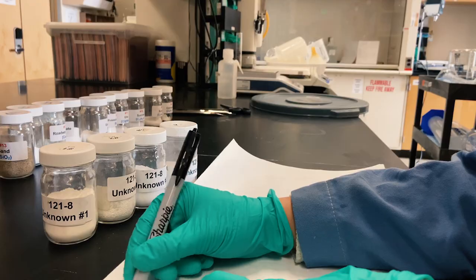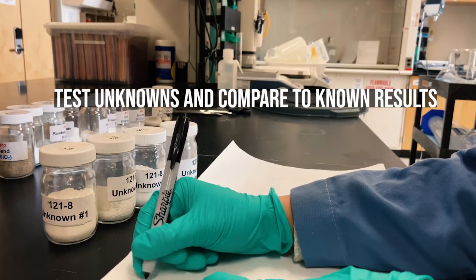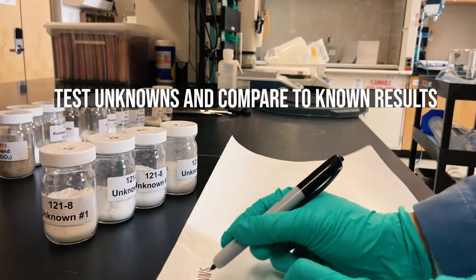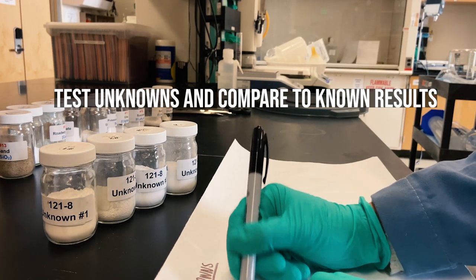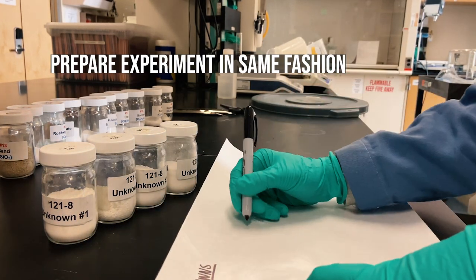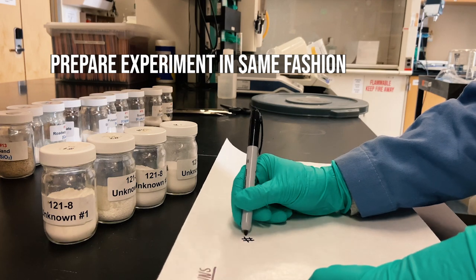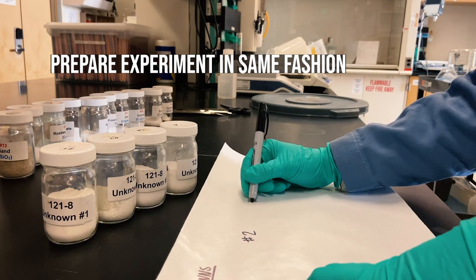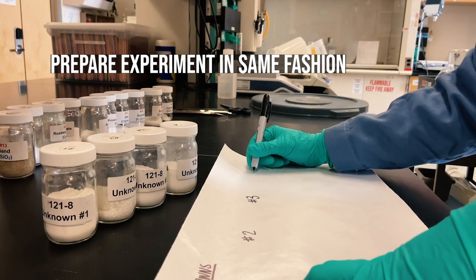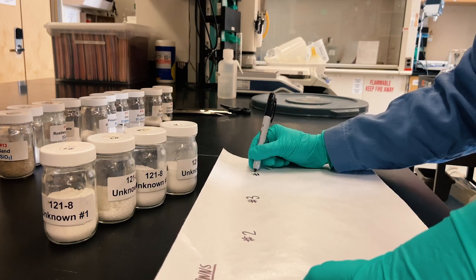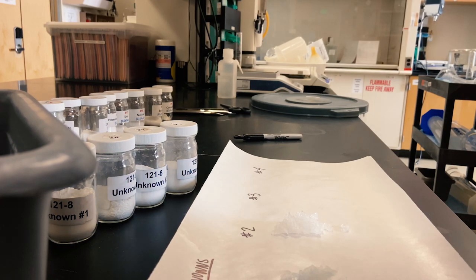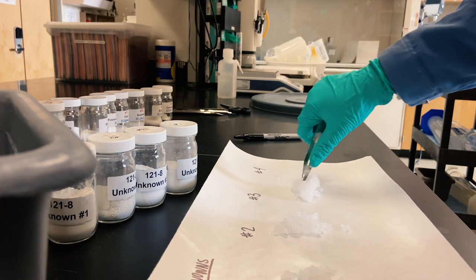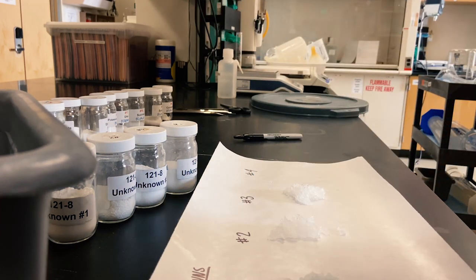All right, and now I'm going to test some unknowns and compare them to the known results, just for fun. So I've got four unknowns, and I'm just going to prepare the wax paper and the experiment in the same fashion that I did for the knowns. And I'm just going to make sure that I label everything properly, and we're just going to sprinkle some compounds on there and see what we think. Are they molecular or ionic?